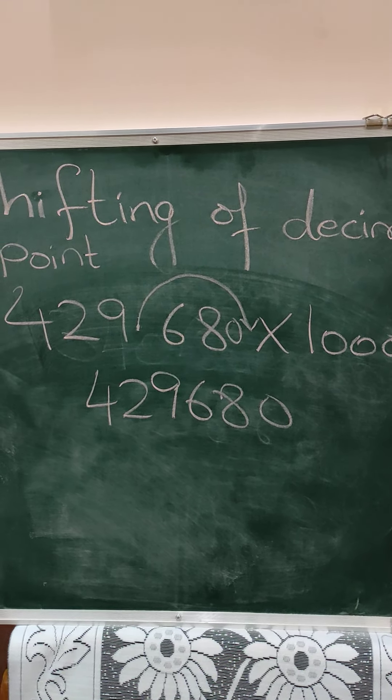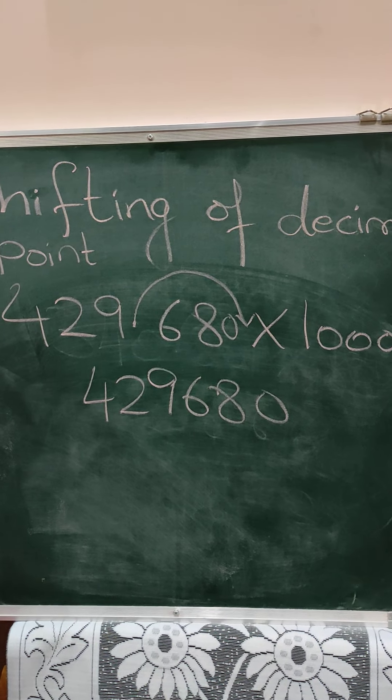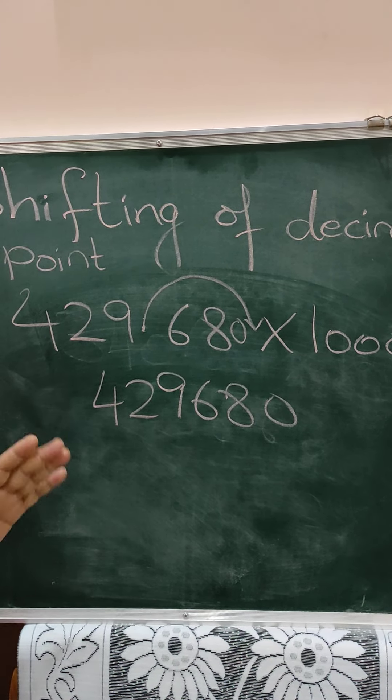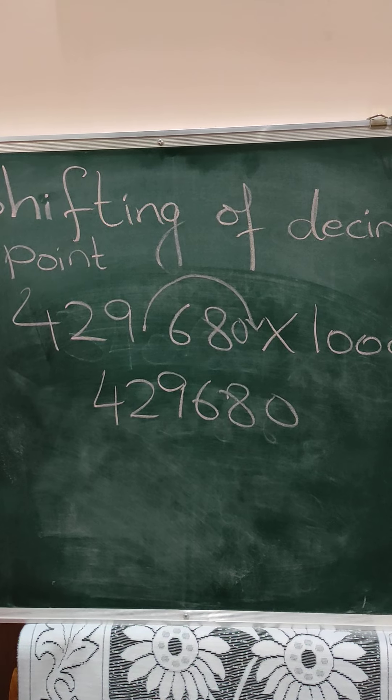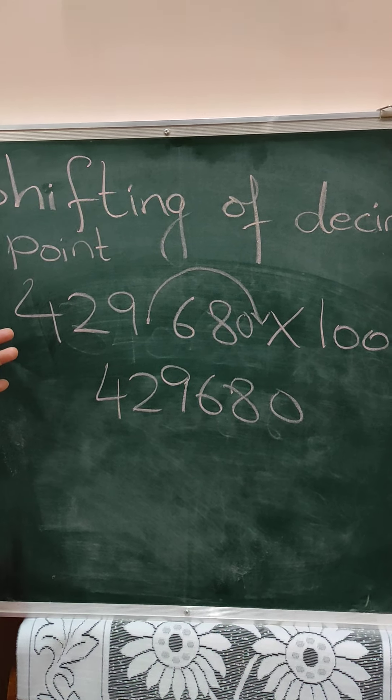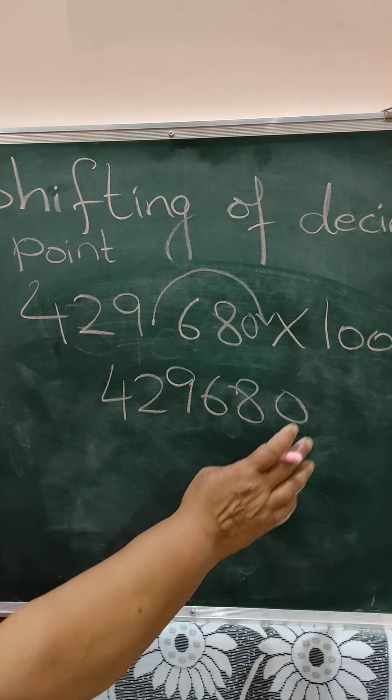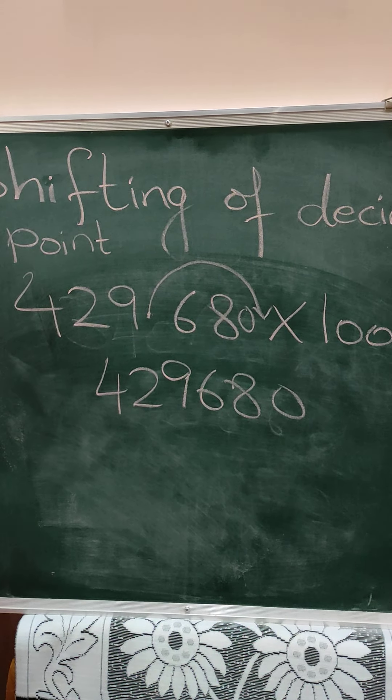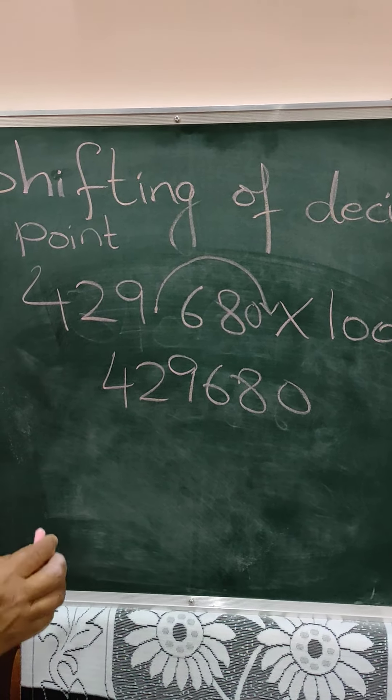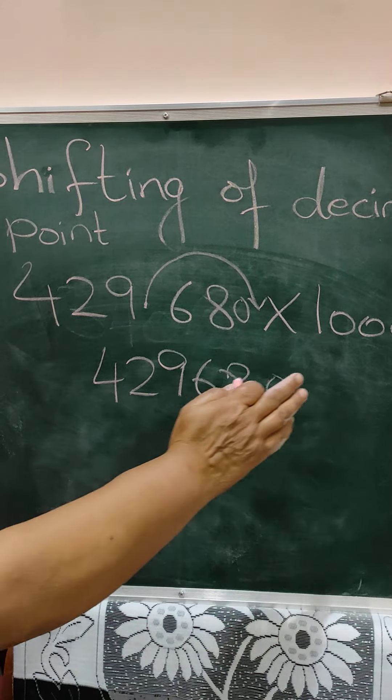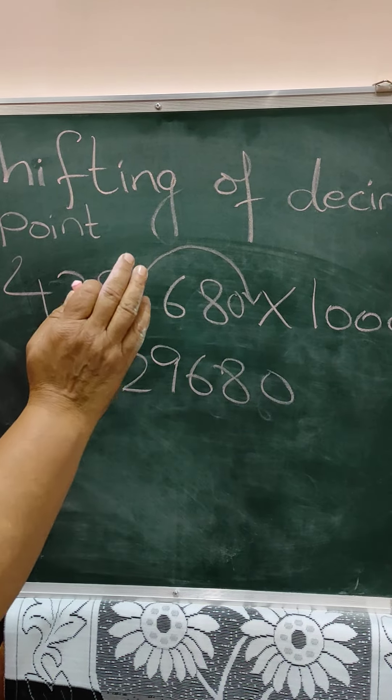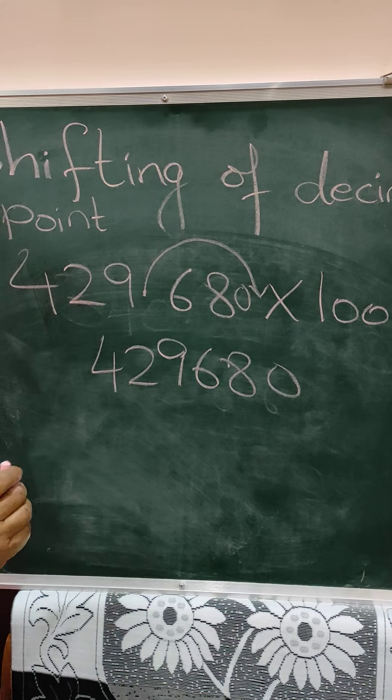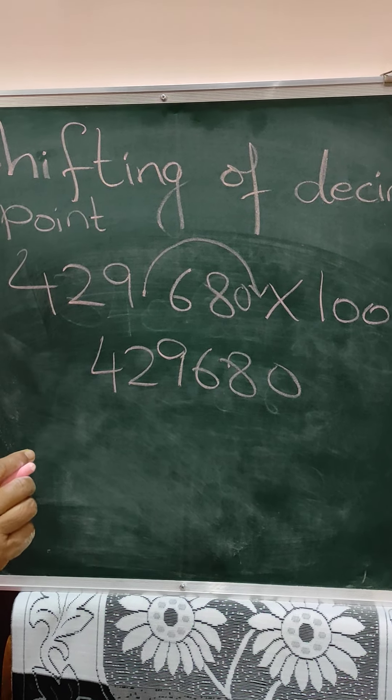I hope you have understood this shifting of decimal point. If there is no decimal point, consider the decimal point at the end. And see the number of zeros. Okay, children? Now, but the thing is that zero should be at the end by which you are multiplying. If it is in between, then you cannot shift.